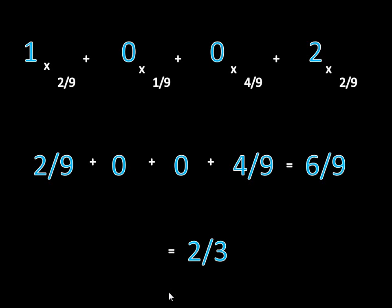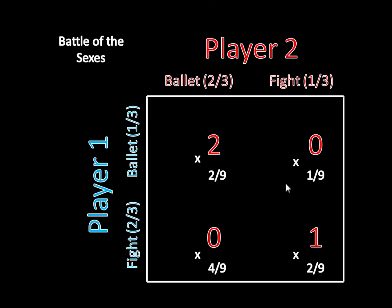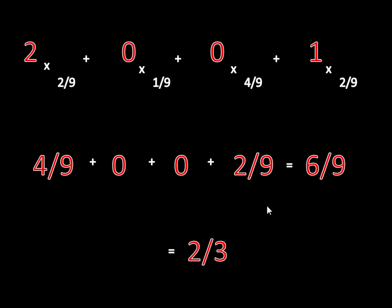Once we've done that for player one, it's easier to do for player two because we just reuse the probabilities — those don't change from player to player. For player two: two times two-ninths, zero times one-ninth, zero times four-ninths, and one times two-ninths. Adding those together also gives six-ninths, so player two is also earning two-thirds in the mixed strategy Nash Equilibrium.